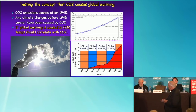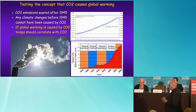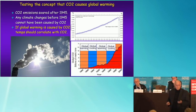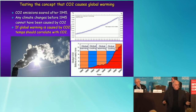So look what happened. Here we start to soar in 1945 — these are global emissions — and superimposed on that is what the climate was doing. For the first 30 years after the big sharp increase, there were 30 years of global cooling. So from this, you could conclude that CO2 causes global cooling.